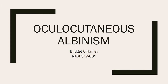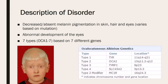Hello, I am Bridget O'Hanley and the genetic disorder that I research is oculocutaneous albinism. There are seven different types of oculocutaneous albinism depending on the gene that the mutation occurs on, so there are seven different genes that can be mutated to cause this disorder. In this presentation I will focus on the most severe type of albinism, which is type 1.